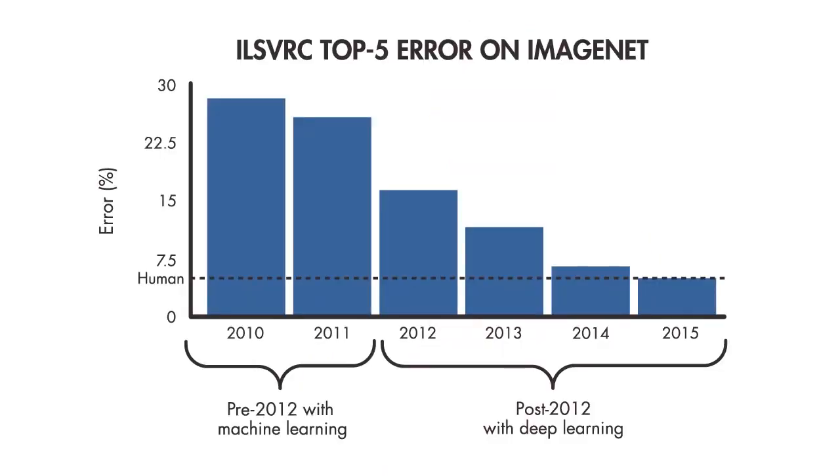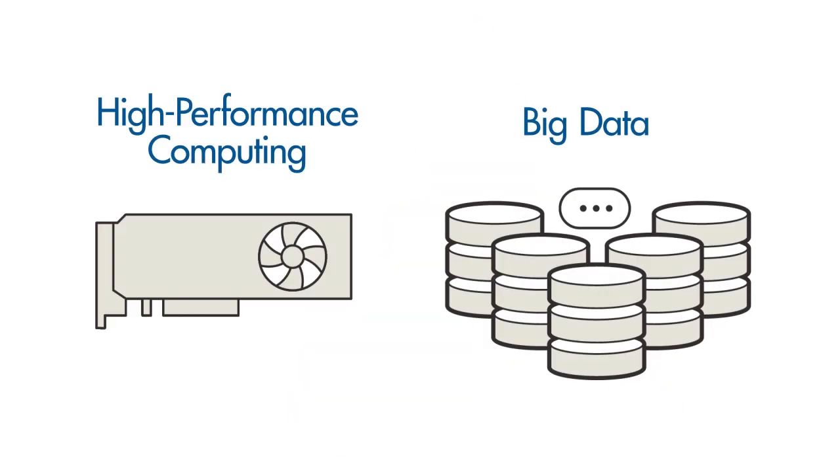First, deep learning methods are now more accurate than people at classifying images. Second, GPUs enable us to train deep networks in less time. And finally, large amounts of labeled data required for deep learning has become accessible over the last few years.